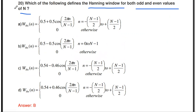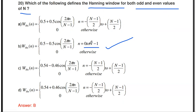Which of the following defines the Hanning window for both odd and even values of N? For both odd and even N, the Hanning window formula is: W_HN(n) = 0.5 − 0.5·cos(2πn/(N−1)) for n from 0 to N−1, and 0 otherwise. Here the time is positive — n from 0 to N−1. Note the sign change: the first formula (odd N only) uses +0.5·cos, while this formula uses −0.5·cos.